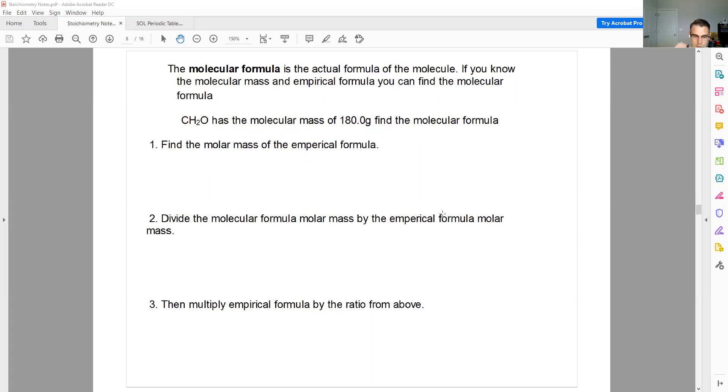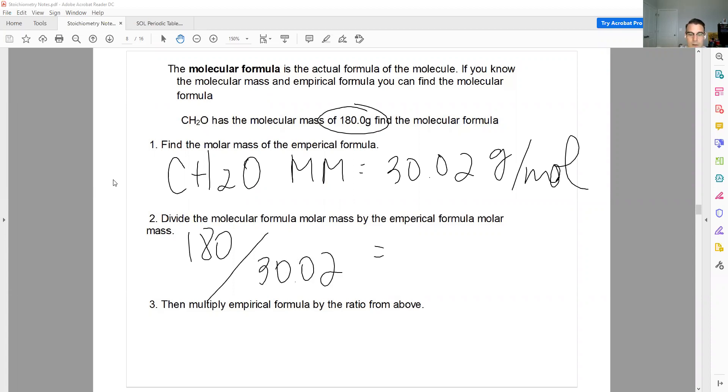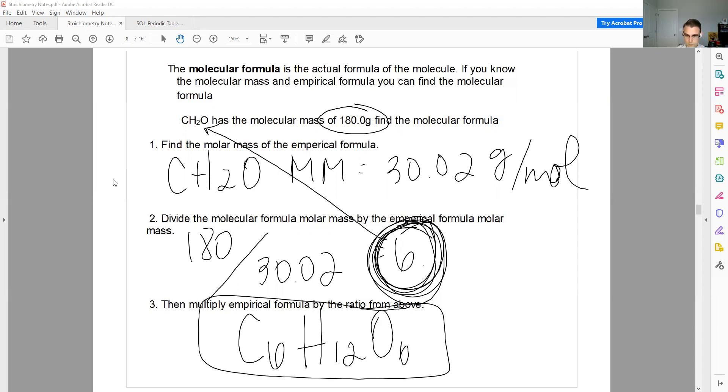So step 1, determine the molar mass of the empirical formula. So CH2O, the molar mass, 30.02 grams per mole. So what we do is we take the molecular mass, so the mass that we were given, the mass of the compound, and divide it by the mass of the empirical formula. And that, again, is going to be so close to the number 6, we don't have to worry about rounding. And then we just multiply our empirical, this number that we get throughout the empirical formula. So my molecular formula, C6H12O6. That's it. Nothing crazy there.